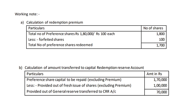First working note: calculation of redemption of preference shares — number of shares redeemed. Total number of preference shares is 1,80,000 divided by 100, that is 1,800 shares. Less forfeited shares: 100 shares are forfeited due to non-payment of final call. So remaining shares are 1,700 shares.